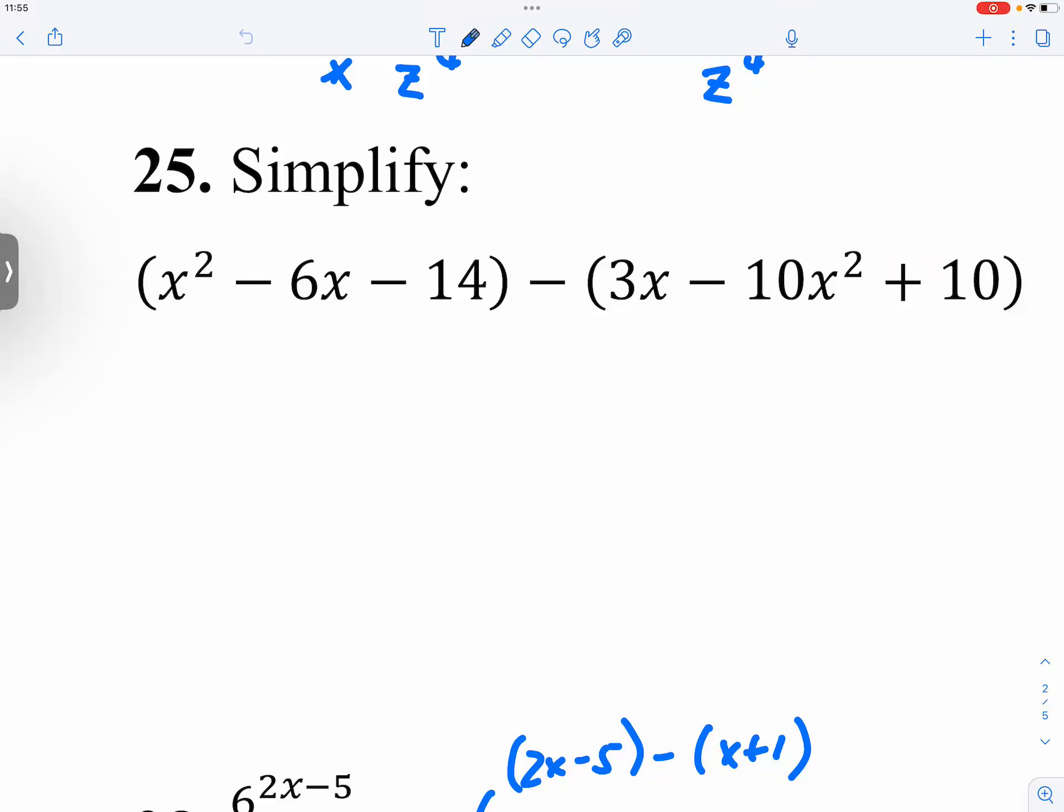This is part two of the review of question 25. We are asked to simplify these like terms. Now the challenge here is the minus in between. Actually, there are two challenges. First, you have to acknowledge that there's a negative and you distribute. That's the first challenge.